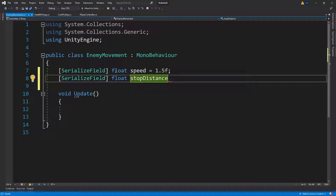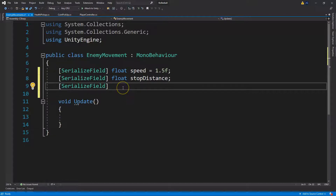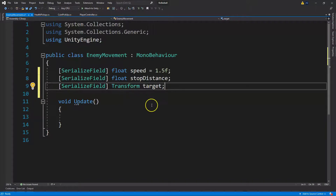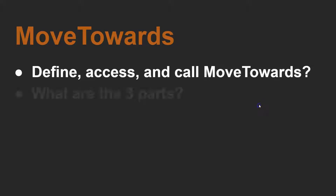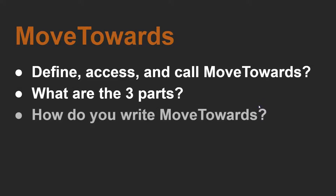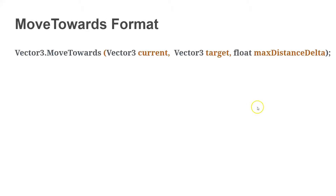We'll also add a stop distance variable — we're going to have the enemy follow the player and then stop at a certain distance. We also need our target, which is the player the enemy is following. To have our enemy follow the player, we're going to use MoveTowards. The format is: Vector3.MoveTowards with current, target, and a float for the max distance delta.